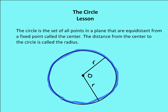So the set of all points here is this blue shaded area or that black circle. That's the circle itself, defined as the set of points that are equidistant from a fixed point called the center. In this case, the fixed point is called O. The distance from the center to the circle is called the radius, and in a circle, all radii are going to be congruent.